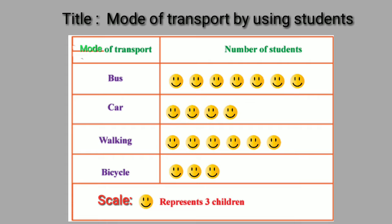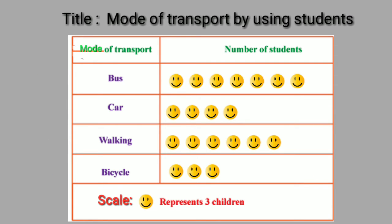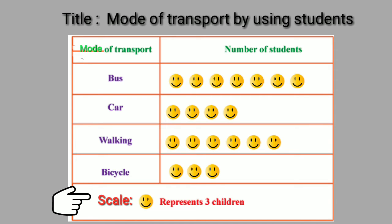In this lesson, we will learn about pictographs. Every pictograph has one title, which tells us what the pictograph is about. Second are pictures, which tell us the given numbers of objects. Third, labels, which tell us what kind of data is shown in that chart. Fourth, scale, which tells us the number each picture is equal to.